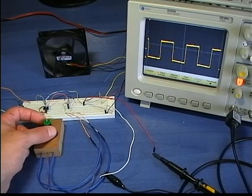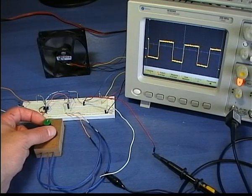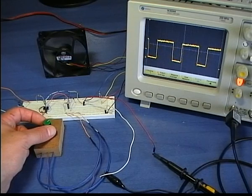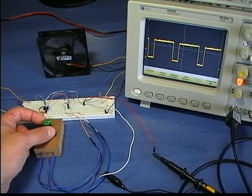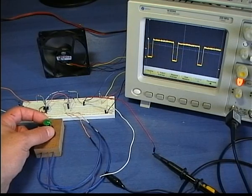Now let's see the circuit in action. The potentiometer will adjust the duty cycle of the pulses. On the oscilloscope, you can see how the duty cycle is affected by the rotation of the potentiometer.